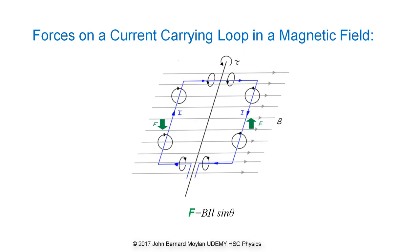The force generated by each side of the loop is given by the equation F equals B I L sine theta. As the sides of the loop are at right angles to the magnetic field, sine theta equals 1, so this equation can be simplified to F equals B I L.